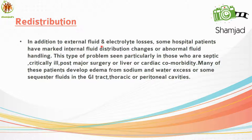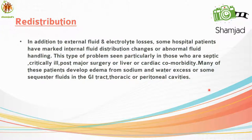Fourth, redistribution: In addition to external fluid and electrolyte losses, some hospital patients have marked internal fluid distribution changes or abnormal fluid handling. This type of problem is seen particularly in those who are septic, critically ill, post major surgery, or have liver or cardiac comorbidity. Many of these patients develop edema from sodium and water excess, or some sequester fluid in the GI tract, thoracic, or peritoneal cavities.